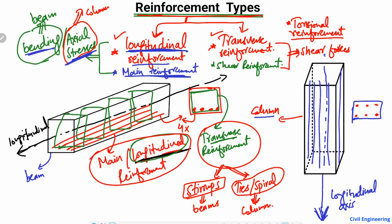If I draw the stirrups — or transverse reinforcement in the column, we call them spiral or ties — they are provided like this. In cross-section they will be rectangular or square depending on the cross-section of the column. This green reinforcement is known as the shear reinforcement and is used to take the shear forces.